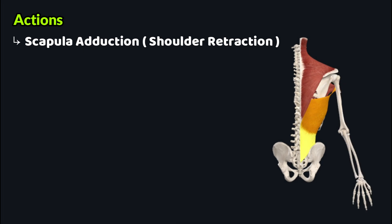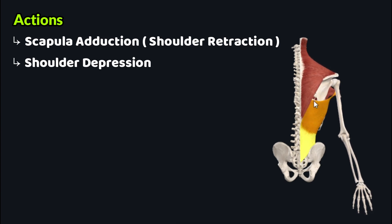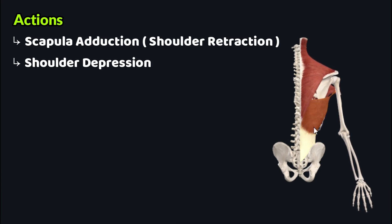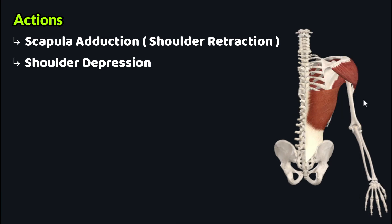Another action performed by the latissimus dorsi muscle is shoulder depression. Just like shoulder retraction, the latissimus dorsi acts on the inferior angle of the scapula and draws the scapula downward. This action is known as shoulder depression.